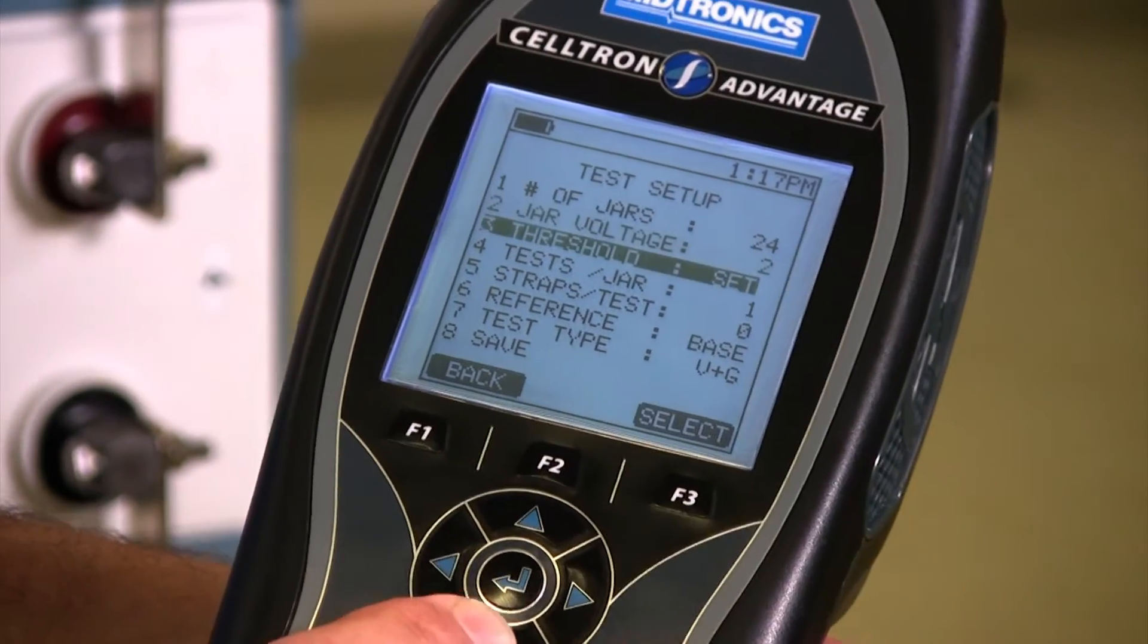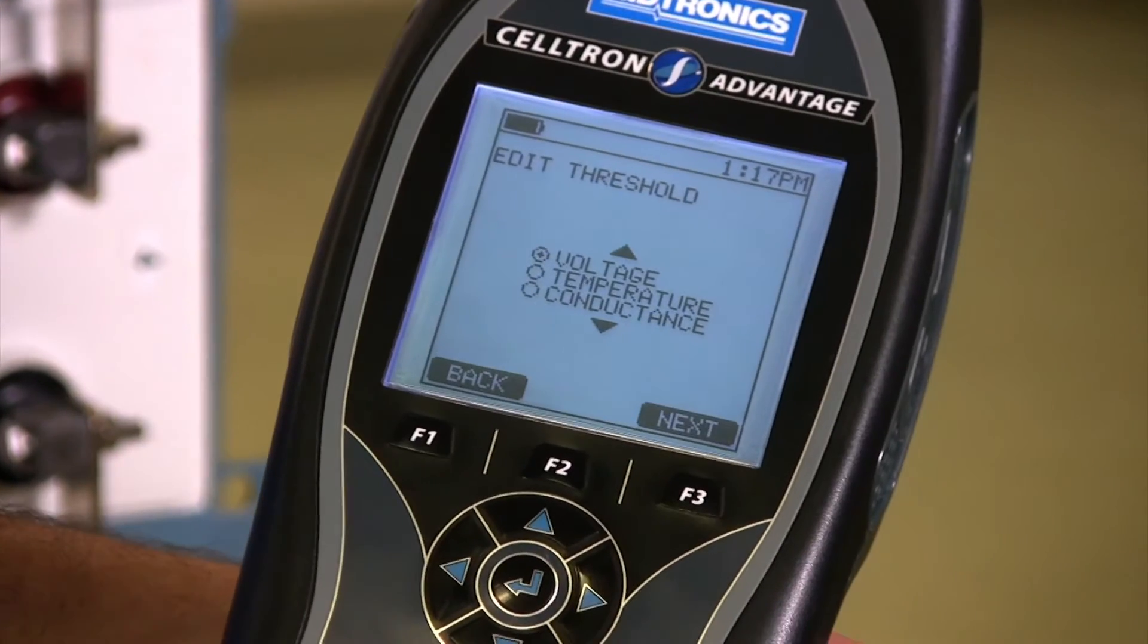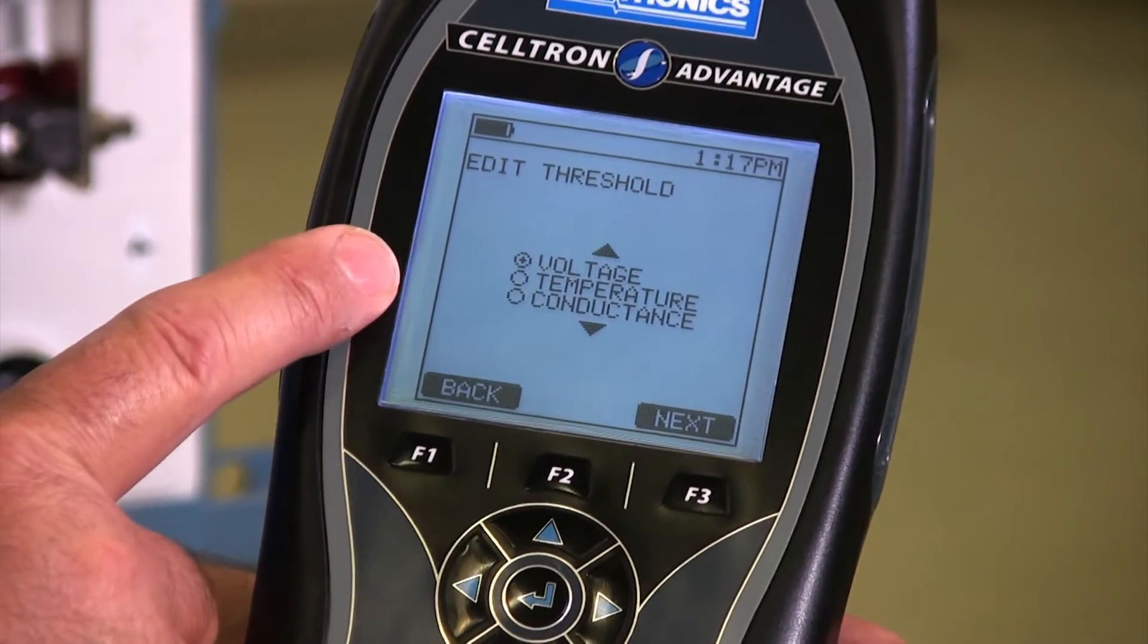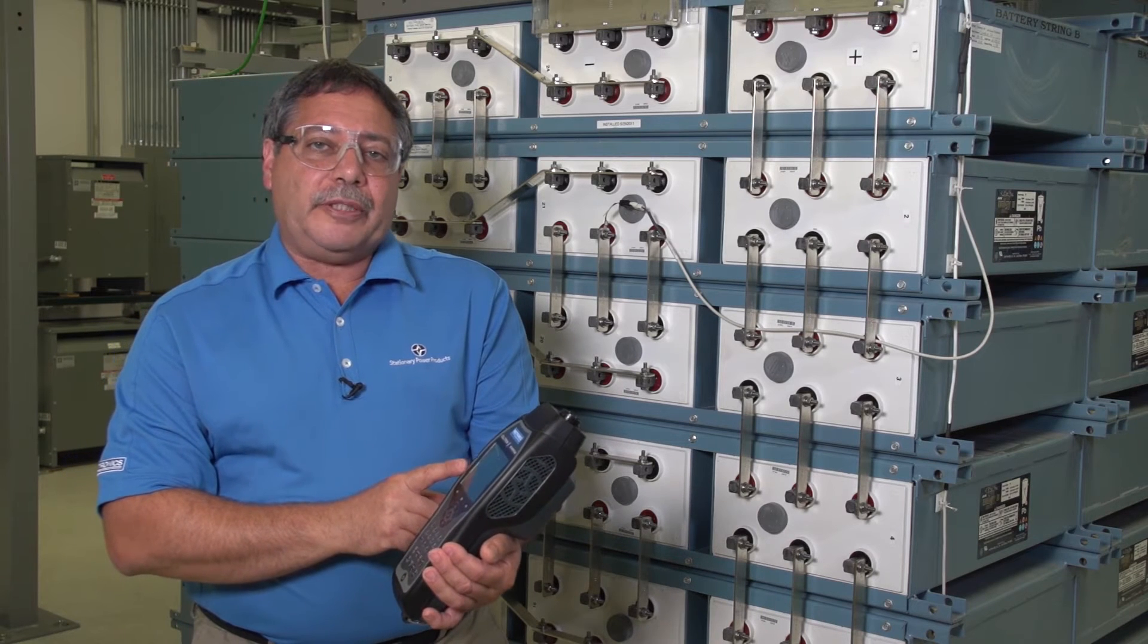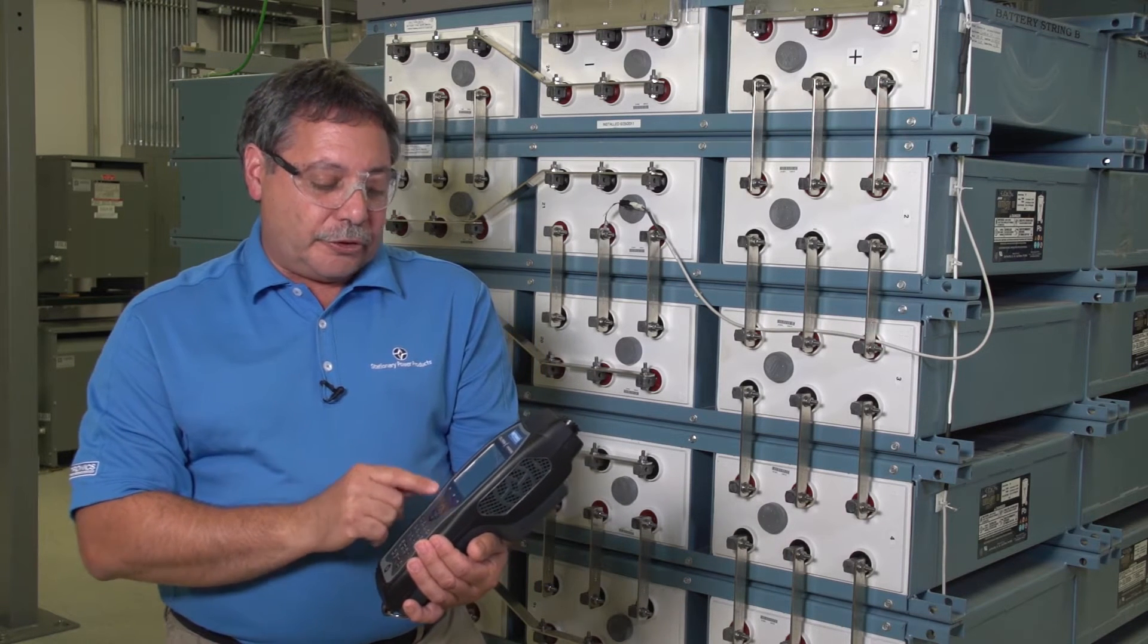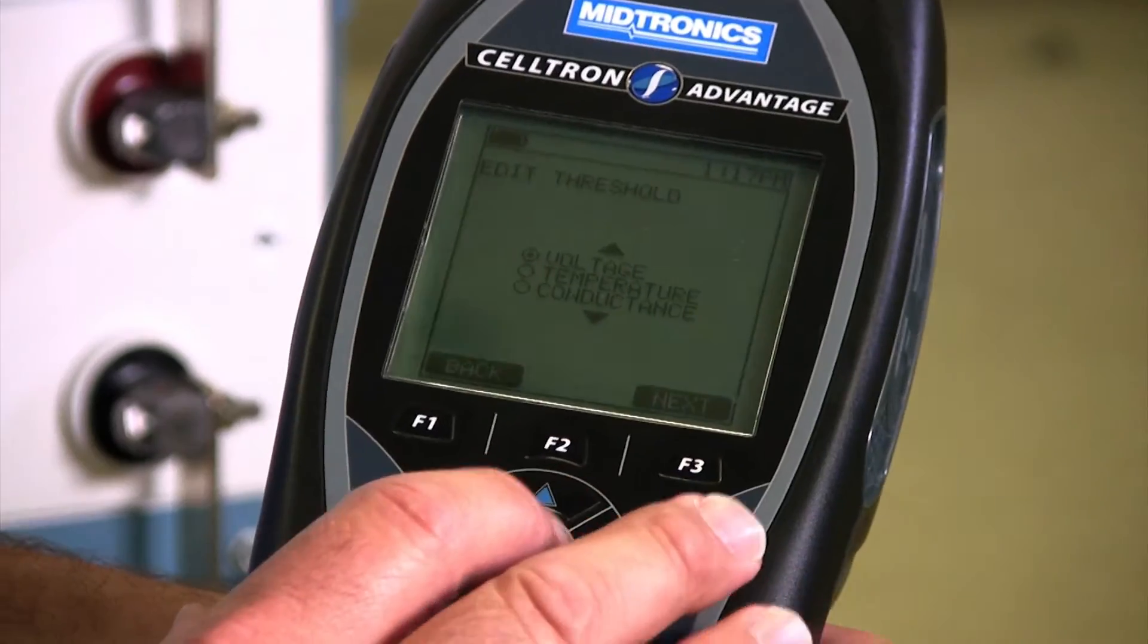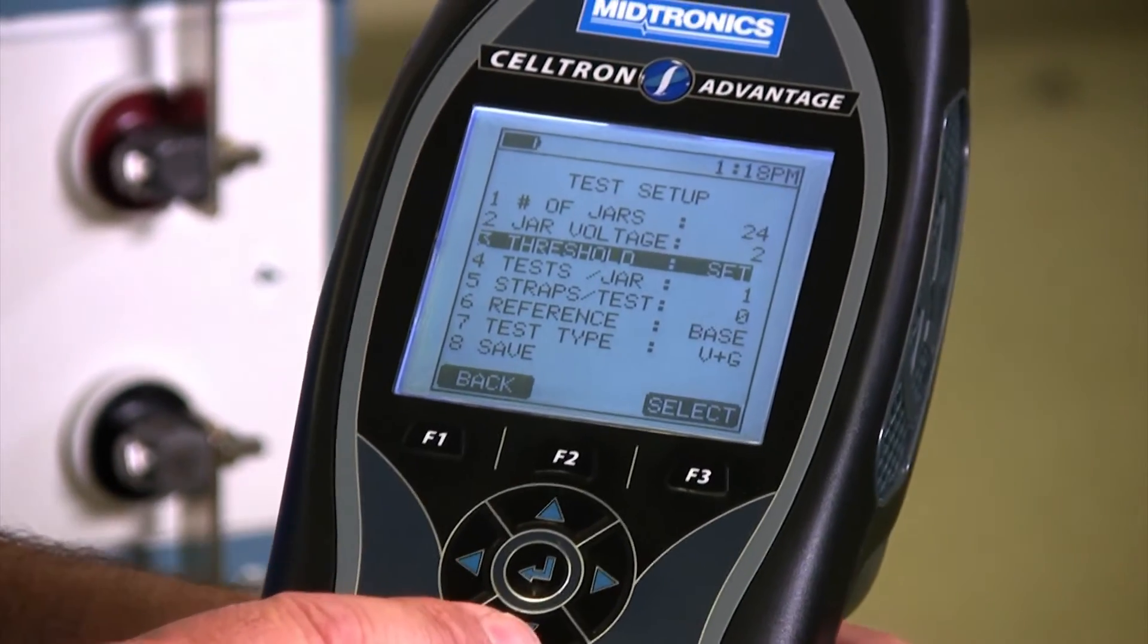Next is our threshold setup. I drill into there. That's going to be the thresholds for voltage, temperature, and conductance. So this is where you'll get your alarm points based on those thresholds. You can leave the defaults that come in the tester if you like, or you can drill into each one and change them if you want to. We're just going to leave them set at the thresholds that come in the tester, the defaults.